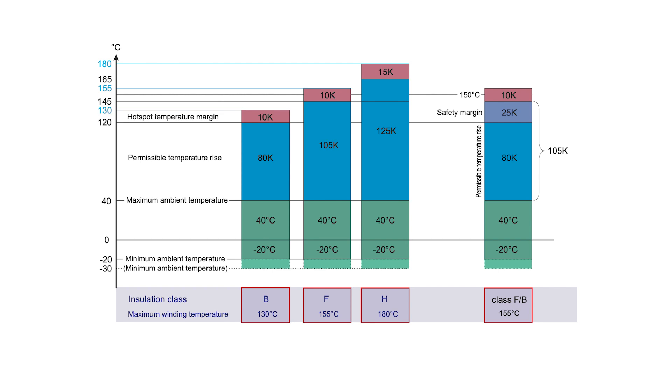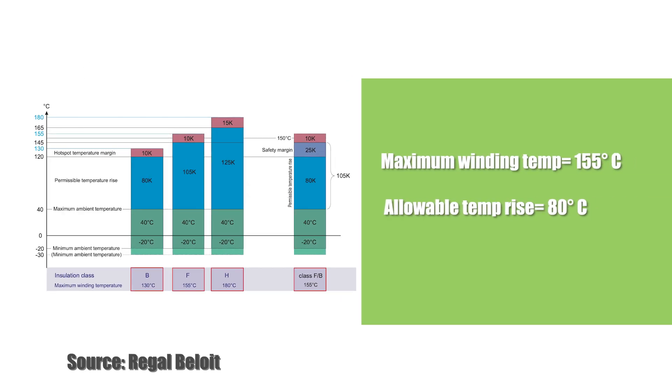Recently, motor manufacturers have begun specifying both the insulation class and the allowable temperature rise, with a rating such as F slash B. The first letter indicates the insulation class, and the second letter indicates the allowable temperature rise. In this case, the maximum winding temperature is 155 degrees C per insulation class F, and the allowable temperature rise is 80 degrees C per insulation class B.